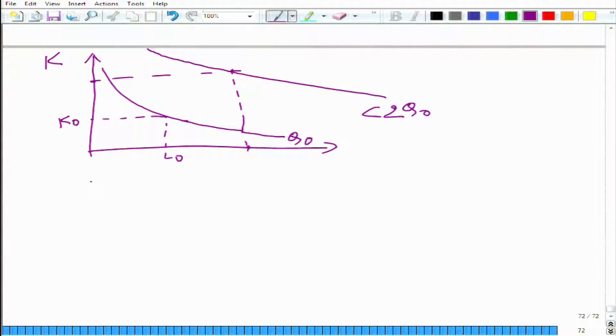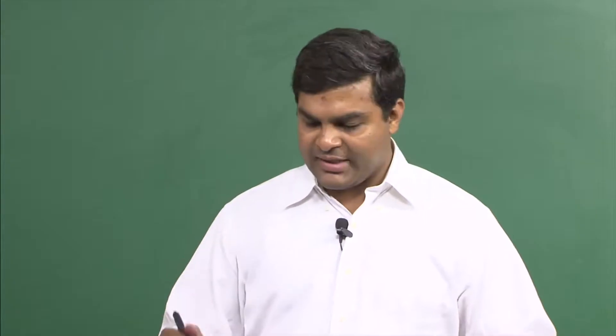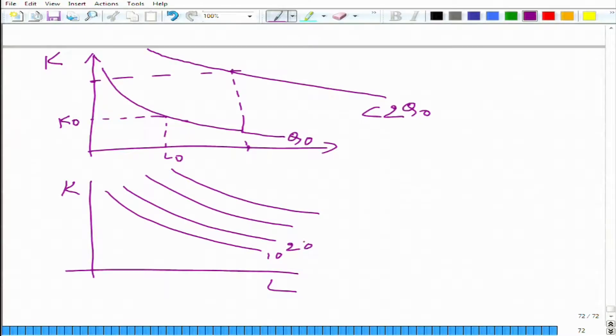In other words, when we have constant return to scale and we are drawing isoquants with equal differences like 10, 20, 30, 40, if this is the case for constant return to scale,